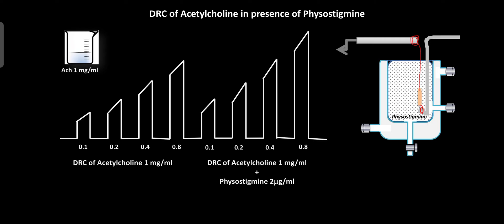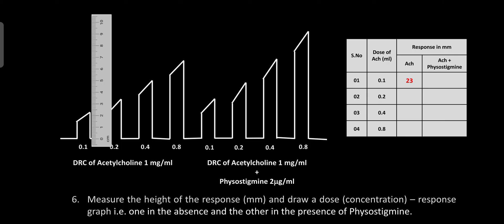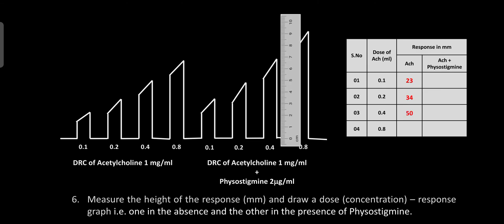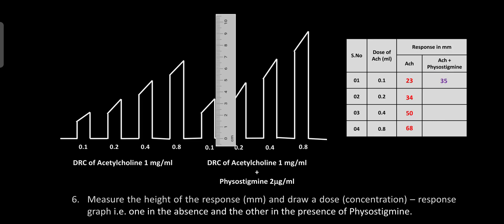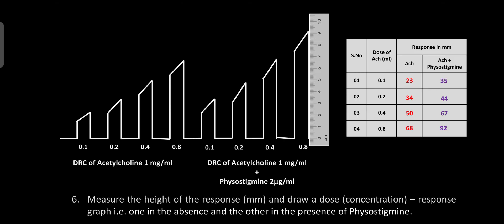After completion of the practical, fix the tracings with the fixing solution. Then measure the height of the responses in mm. For 0.1 ml without physostigmine the response is 23 mm, 0.2 ml is 34 mm, 0.4 ml is 50 mm, and 0.8 ml is 68 mm. In the presence of physostigmine: 0.1 ml gives 35 mm, 0.2 ml gives 44 mm, 0.4 ml gives 67 mm, and 0.8 ml gives 92 mm. The table indicates that in the presence of physostigmine, the response was increased.